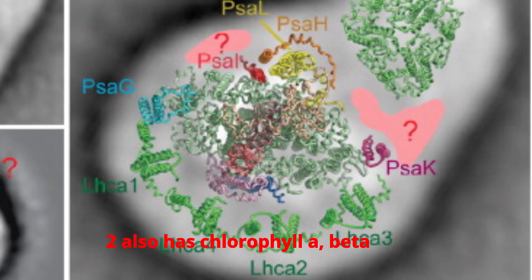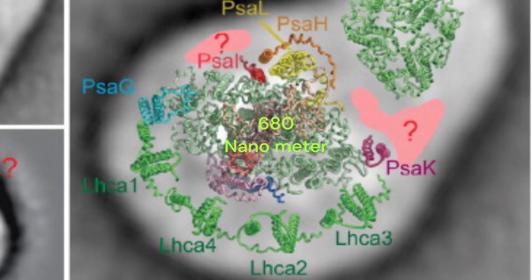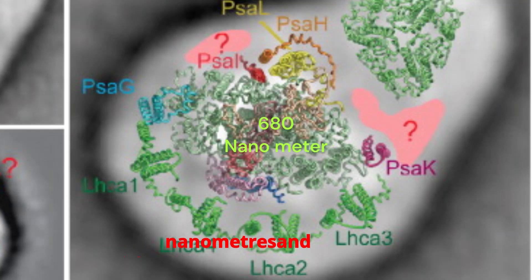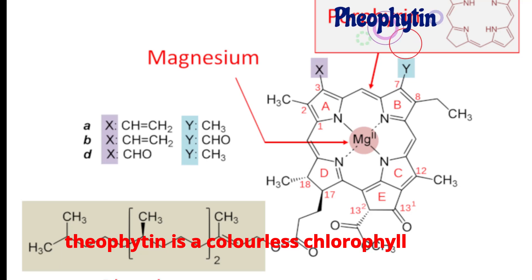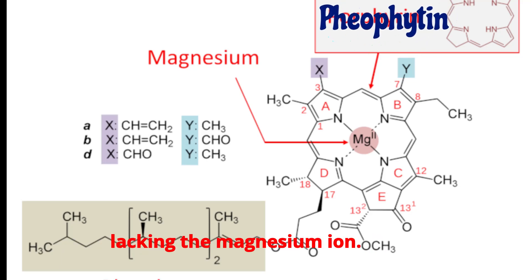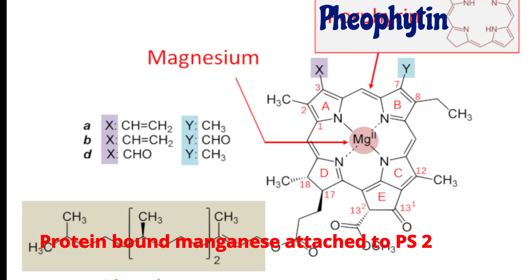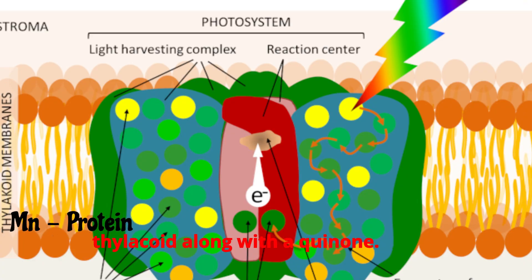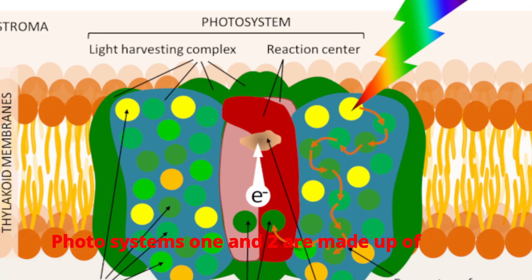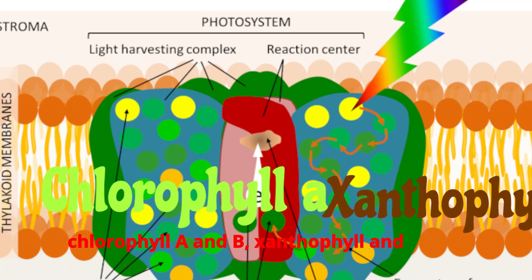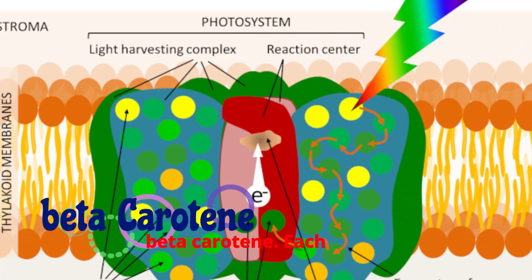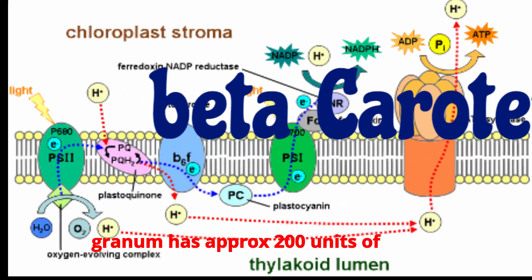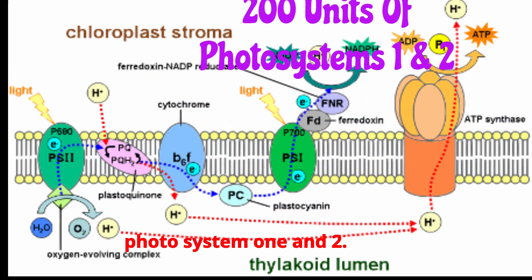Photosystem 2 also has chlorophyll A, beta-carotene, and a little chlorophyll B. The reaction center has P680, absorbing light at 680 nanometers. Pheophytin is a colorless chlorophyll lacking the magnesium ion. Protein-bound manganese is attached to PS2, and chlorine is located on the inner side of the thylakoid along with a quinone. Both photosystems 1 and 2 are made up of chlorophyll A, B, xanthophyll, and beta-carotene. Each granum has approximately 200 units of photosystems 1 and 2.